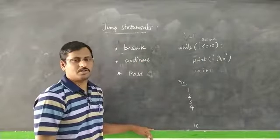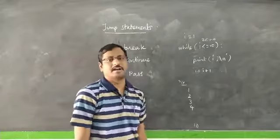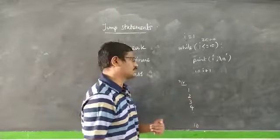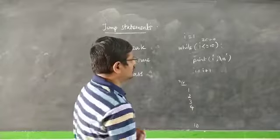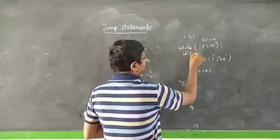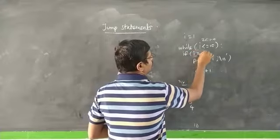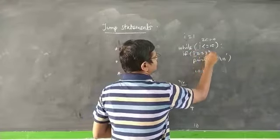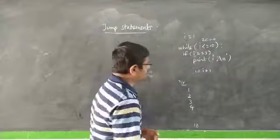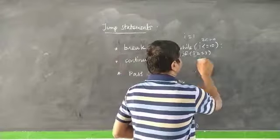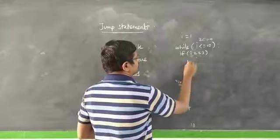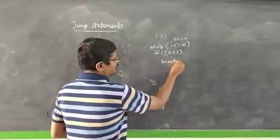Now, if you look at this loop and you want to terminate the loop, we add a condition: if i is equal to 3, then break. So when i equals 3, the break statement is reached.